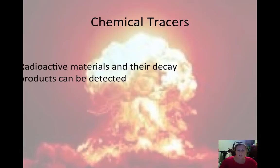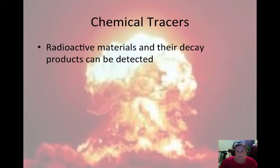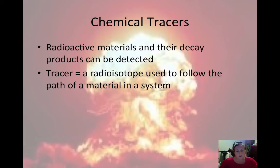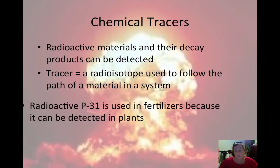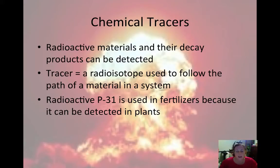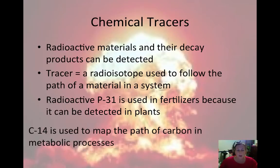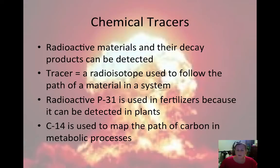Chemical tracers are radioactive materials that can be detected in a substance and in the human body. A tracer is a radioisotope used to follow the path of a material in a system — it traces a path. Radioactive phosphorus is used in fertilizers because it can be detected in plants, and carbon-14 is used to map the path of carbon in metabolic processes.